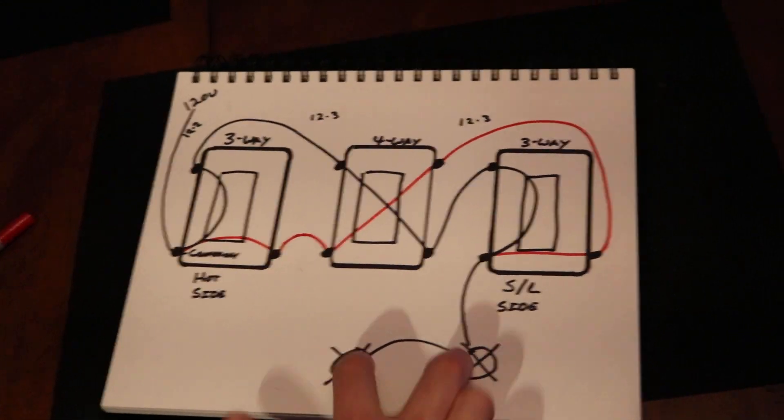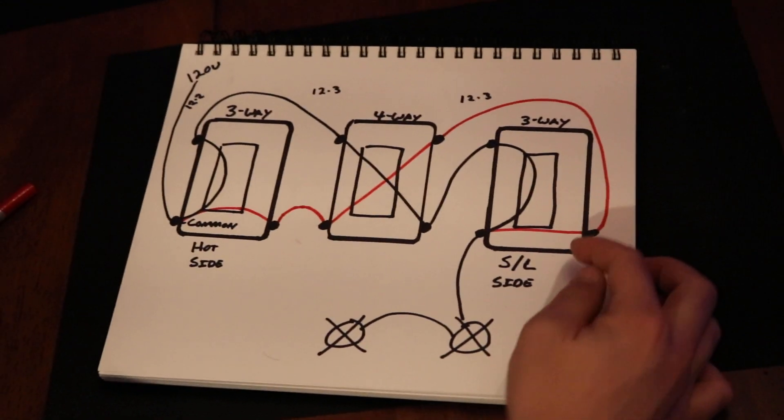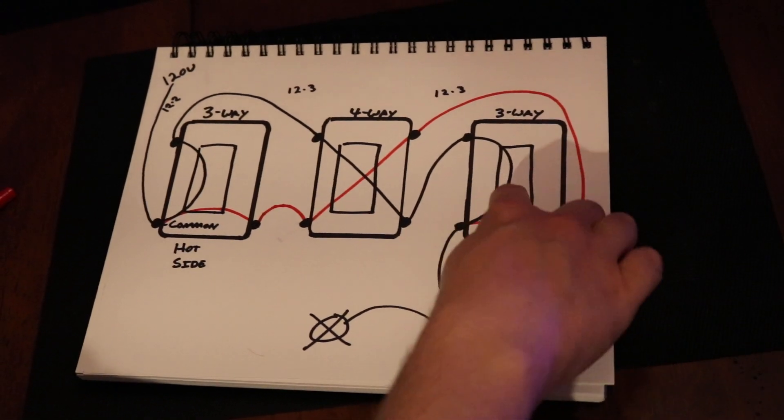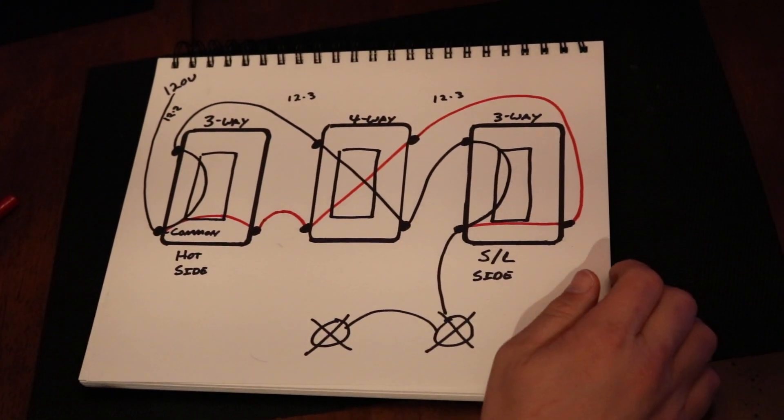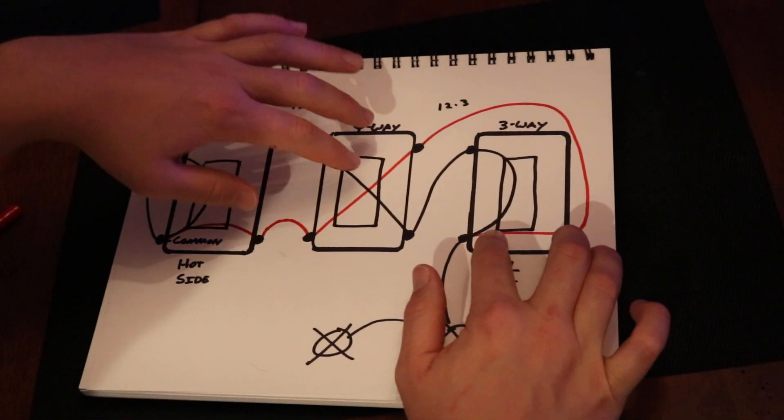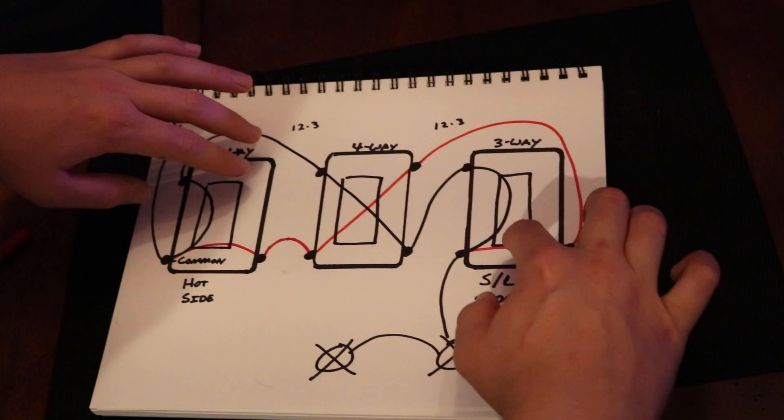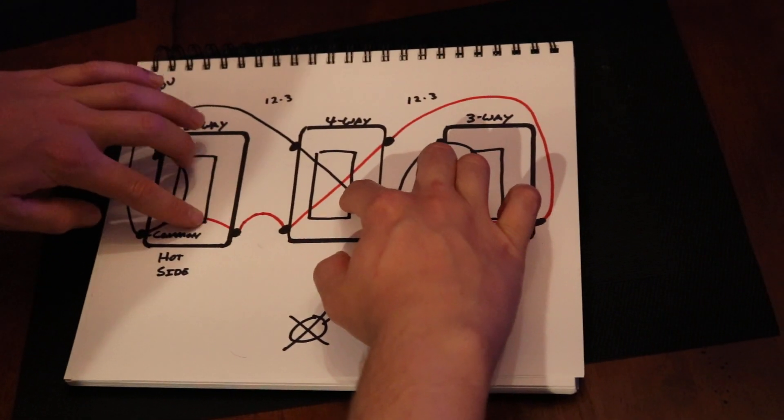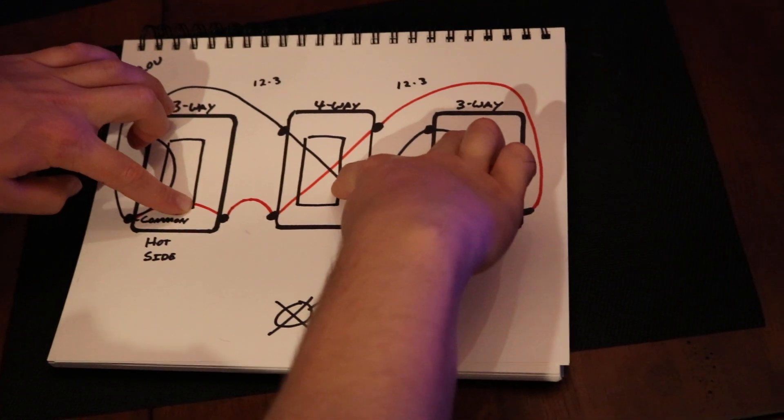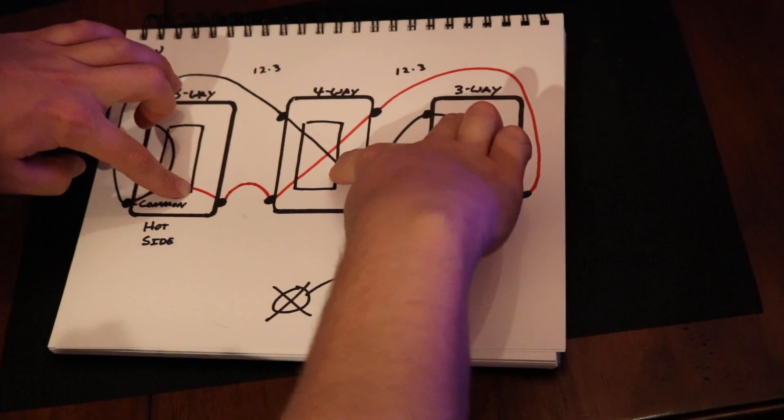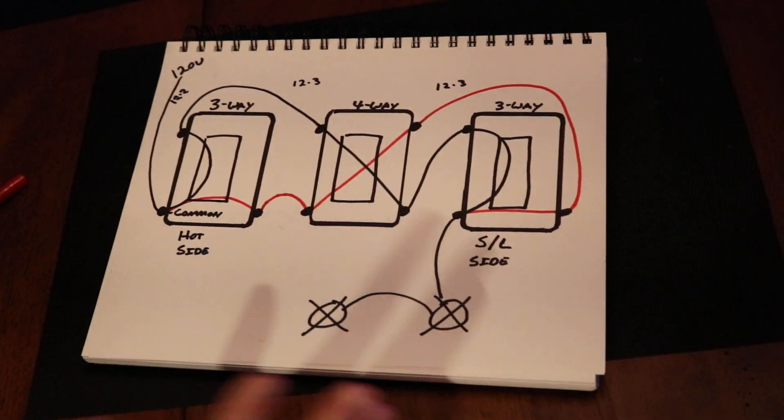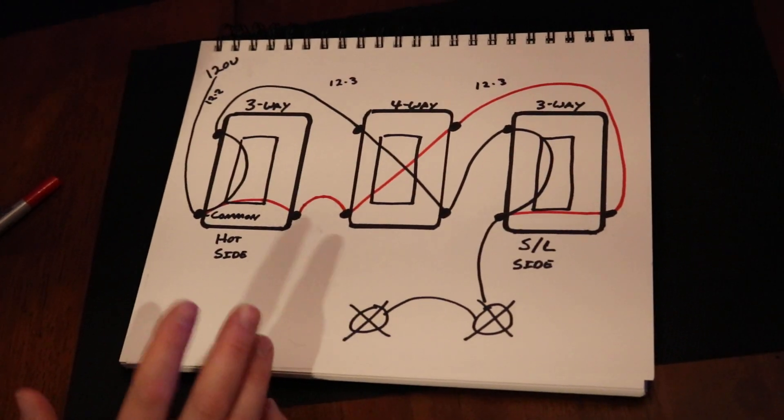That can be a lot to wrap your head around. If this is in the up position, continuity is going this way. If it's down, it's going this way. Depending on what's going on down the line here, both of these could be open and this could be open, which means the lights are off. And then when you turn it on here, it's bringing power back this way. Or it could be the other way. It's complicated. But that's basically the mechanics.